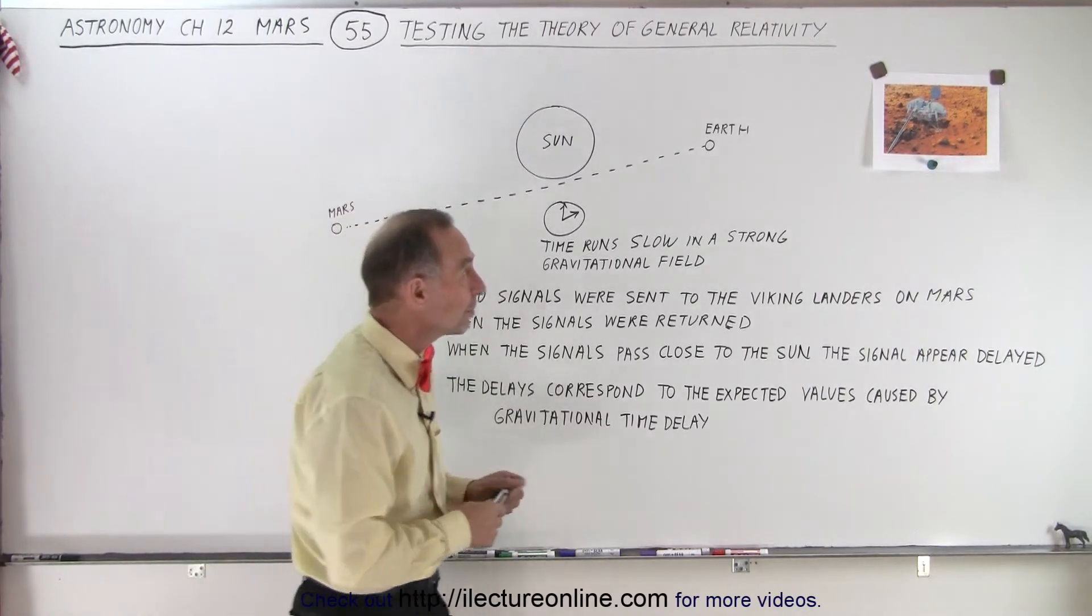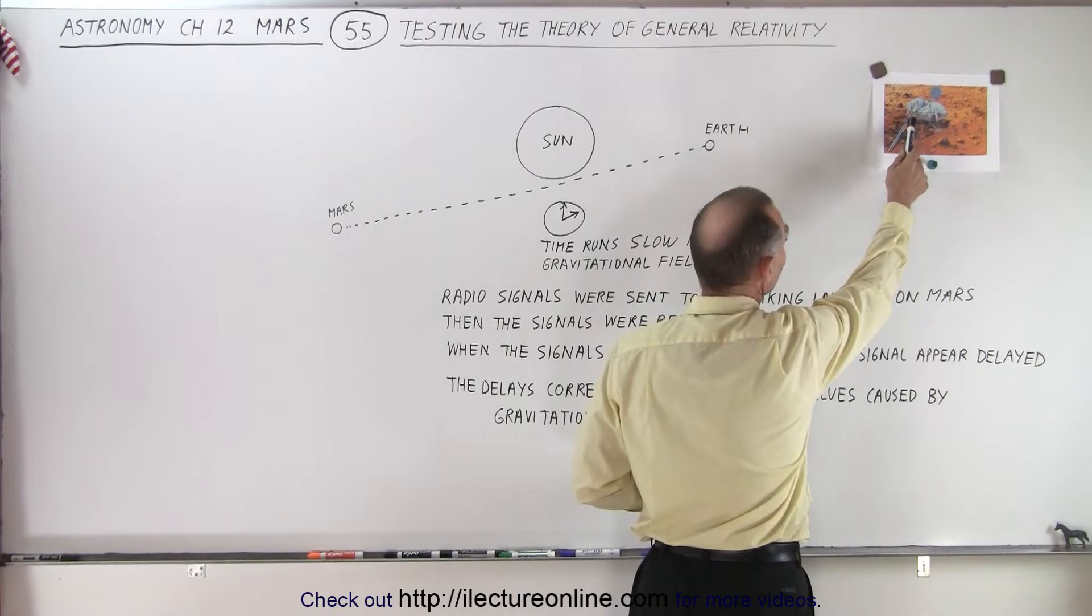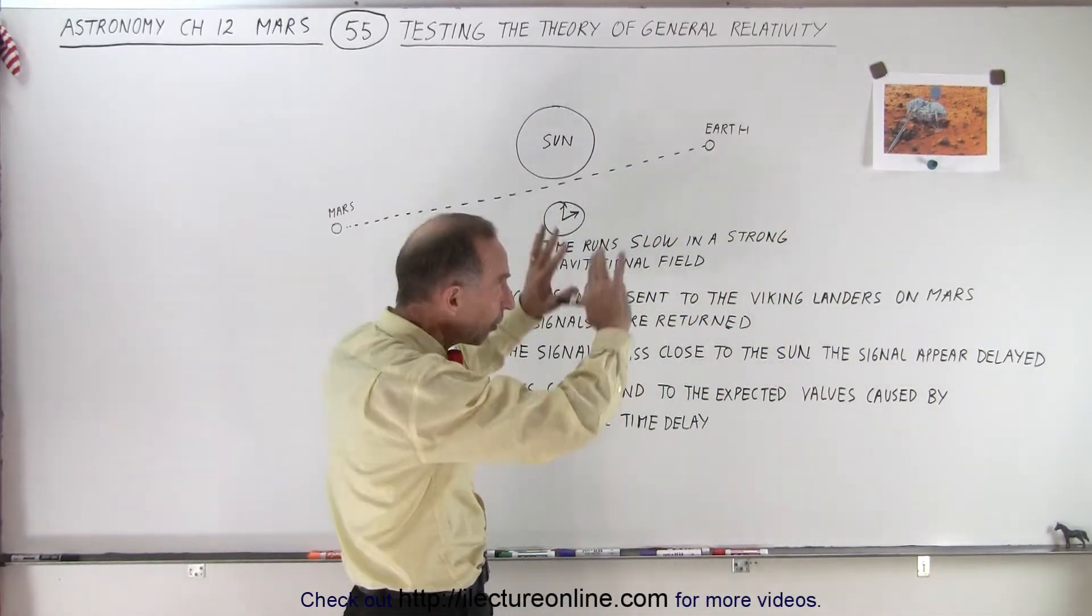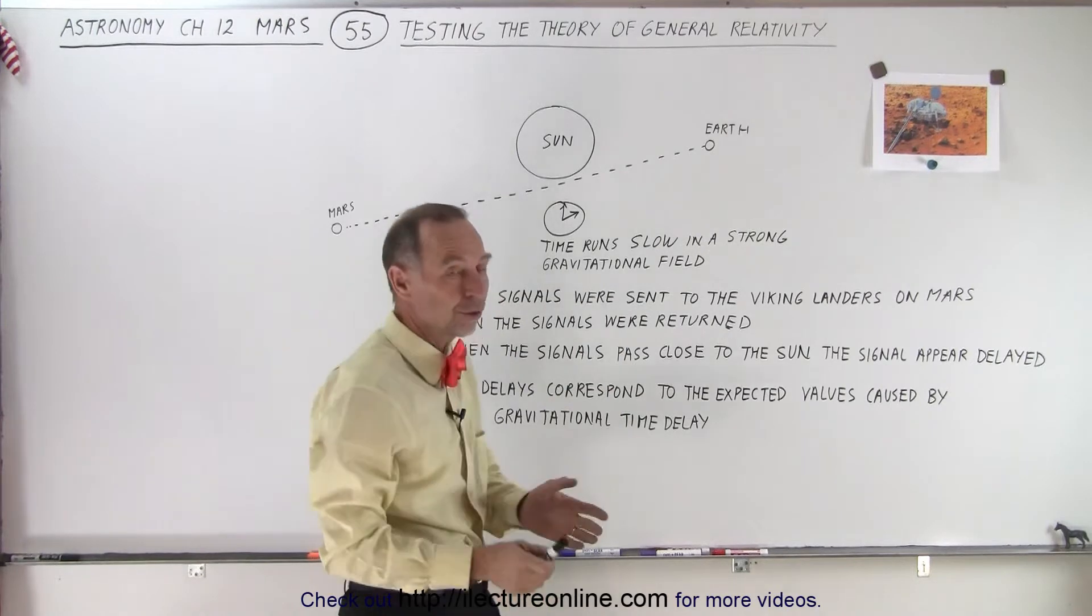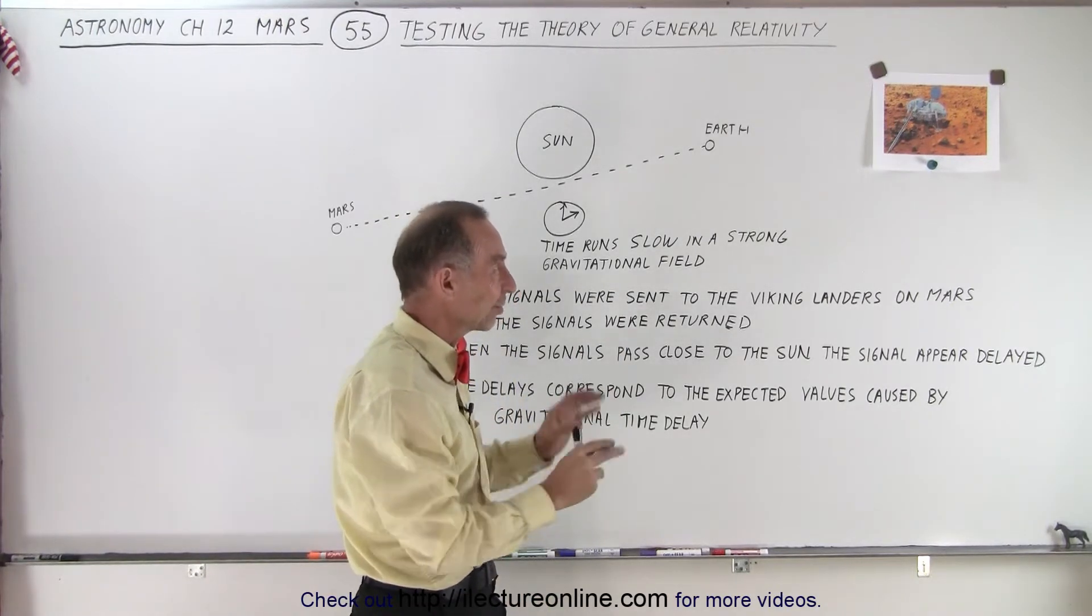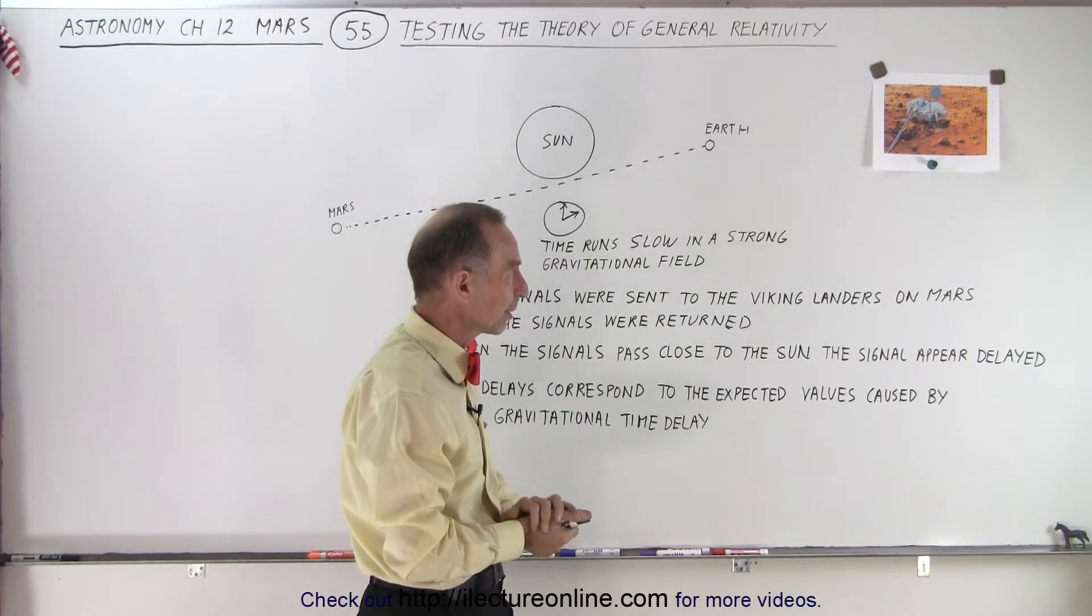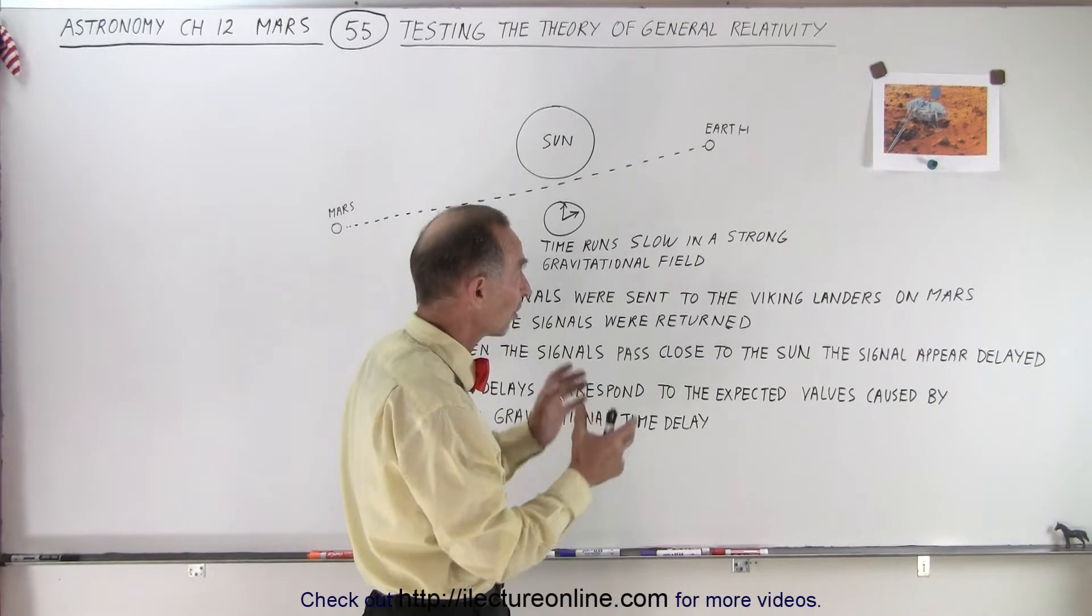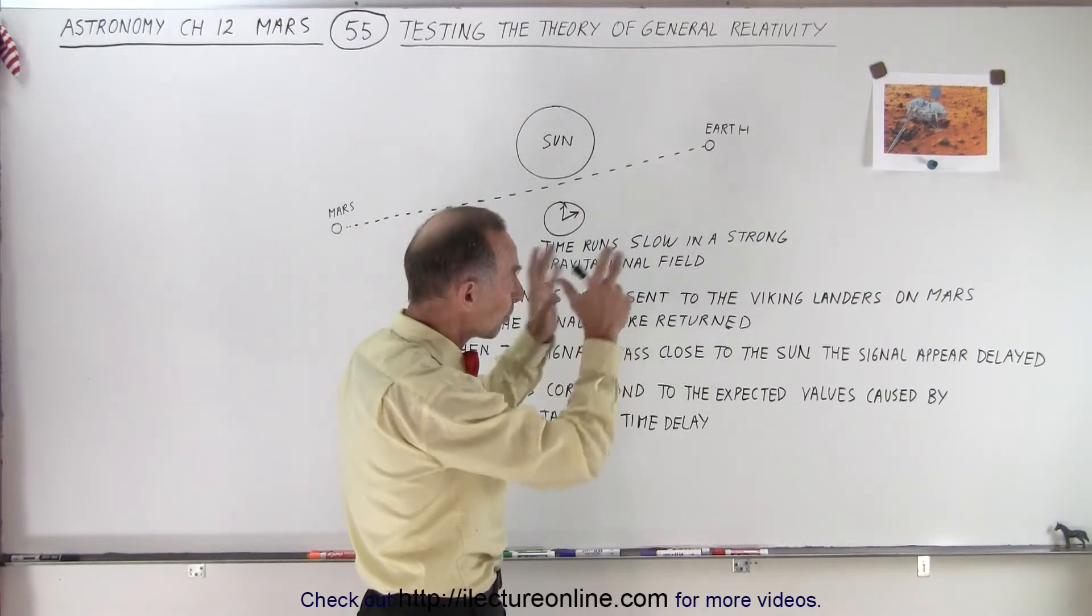Here we have a picture of the Viking lander superimposed on an actual background of the surface of Mars. Now of course the Viking landers were not able to take selfies like that, so this was a doctored up picture, but it's nevertheless a mock-up version of the lander superimposed on a Martian background.